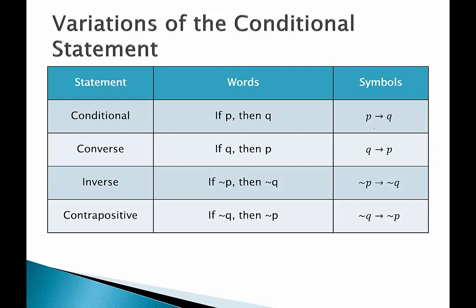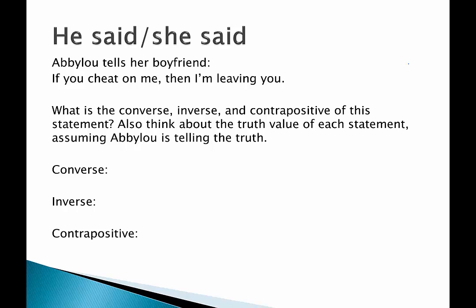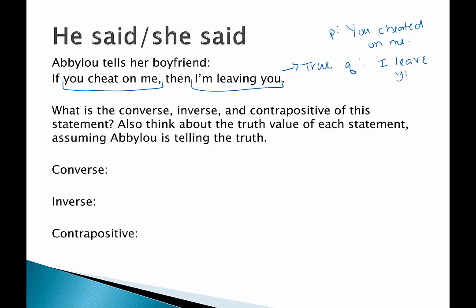Let's look at some examples of writing the converse, inverse, and contrapositive of a given conditional statement. I call this one 'he said she said.' Abilou tells her boyfriend: if you cheat on me then I'm leaving you. We're going to assume Abilou is absolutely telling the truth, so this is a true statement. We'll also determine whether the converse, inverse, and contrapositive are also true. P is 'you cheated on me' and Q is 'I leave you.'